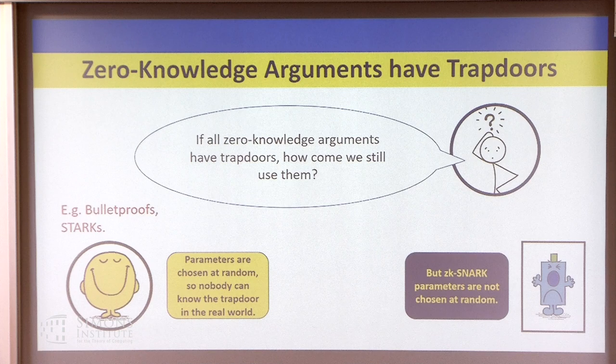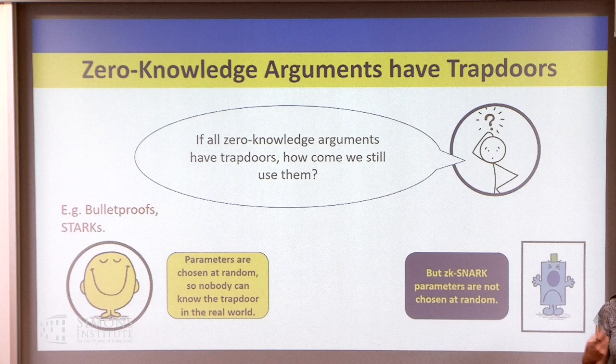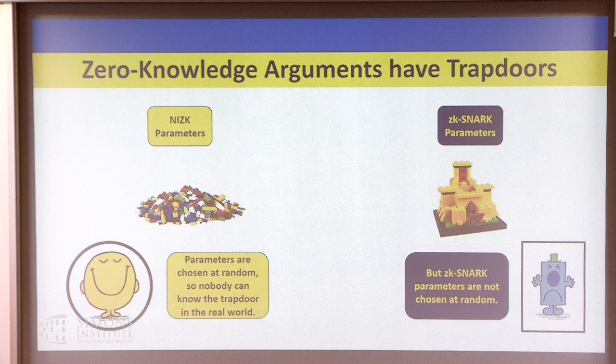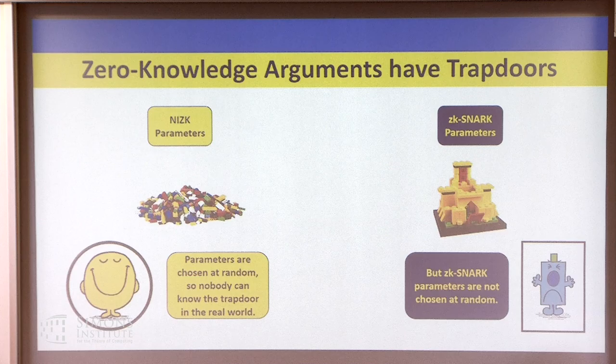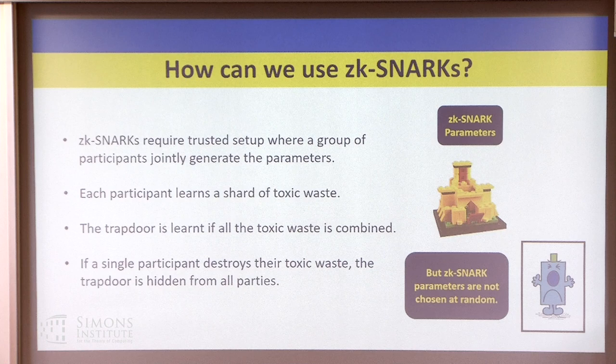The problem with SNARK parameters, unlike STARK parameters, is that they are not chosen at random. They have a very high degree of structure. We have to find a way to generate parameters with this structure such that we can still build proofs, but nobody knows the underlying elements which have been used. STARK parameters are just a mess of random things, whereas SNARK parameters are very carefully constructed to be exactly the right format.